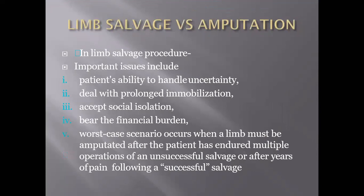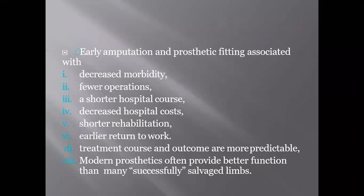Whenever planning for limb salvage, you have to counsel the patient regarding secondary amputation, sepsis, and significant social and economic burdens. The advantages of early amputation over salvage are: decreased morbidity, fewer operations needed, shorter hospital stay, decreased hospital costs, shorter rehabilitation, early return to work, and a more predictable treatment course and outcome.